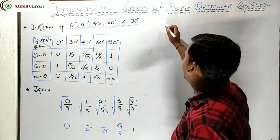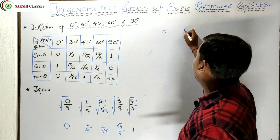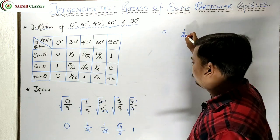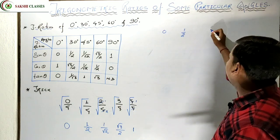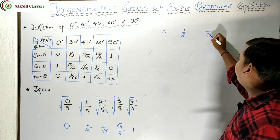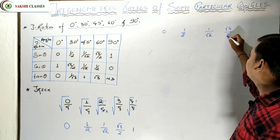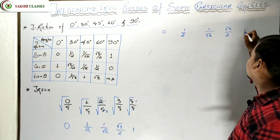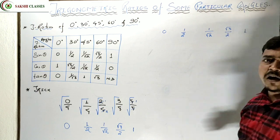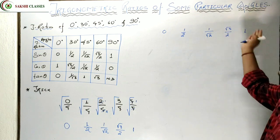Let me show you — first value came 0, second value came 1/2, third value came 1/√2, then √3/2 came, and last came 1. So you have written down the sin values using this trick. Sin column is done.